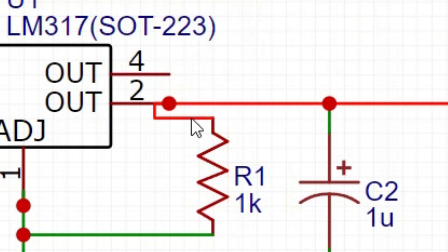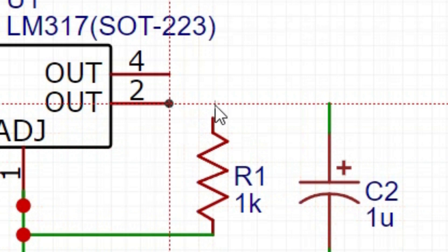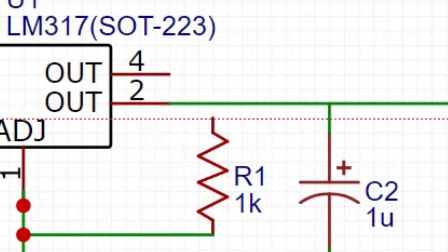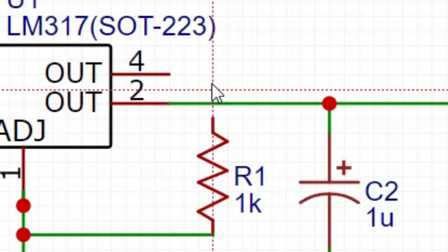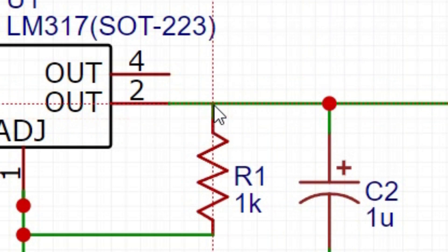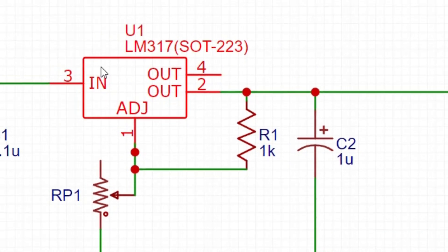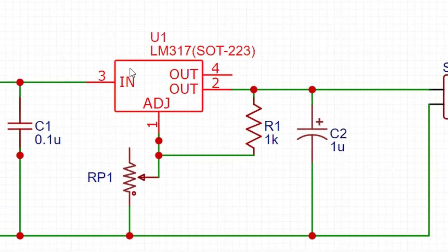I press ESC to exit. I didn't like this wire here, so I click, erase, delete it, and redo the drawing. When you pass over a junction point it automatically places the junction dot. And the circuit drawing is done.